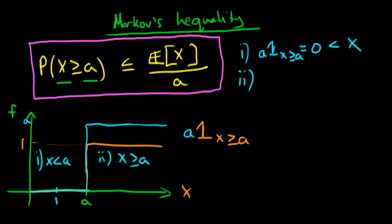In the second region, x is greater than or equal to a. Here, a times our indicator function is not equal to 0 — it equals a. And what values does x take? At x equals a, it takes on the value of a, and for any value of x greater than a, it's obviously greater than a. So in the second region, a is less than or equal to x. In both regions we have proved that x is greater than or equal to a times our indicator function.